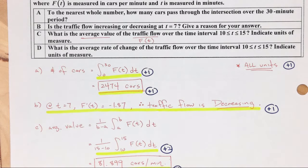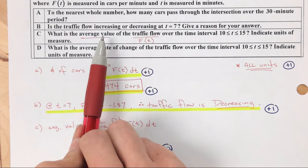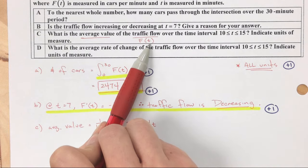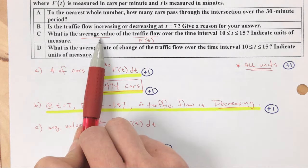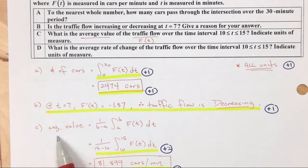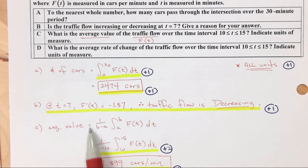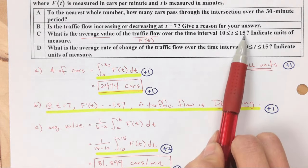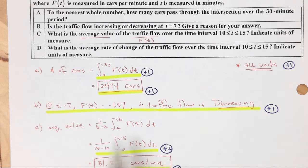Part C. What is the average value of the traffic flow? So you want average value, and then this is the traffic flow. So you want average value equals, here's my formula for average value. And I want average value from 10 to 15 minutes. So 10 to 15 minutes, 1 over 15 minus 10, and then there you go. So that whole thing,